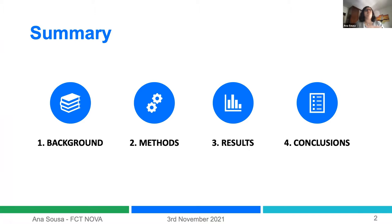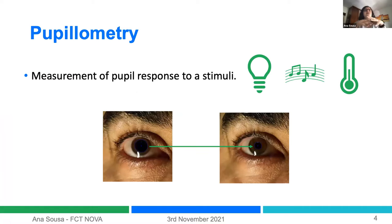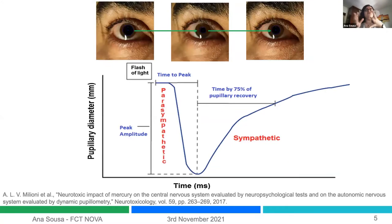First, in the background, we need to know what pupillometry is. Pupillometry is the technique that allows the measurement of pupil response to a stimulus. This stimulus can be light, music, or heat — there are different kinds of stimuli that make our pupil contract and dilate. If we measure it quantitatively, we can build graphics showing the pupil response. For example, after a flashlight, the pupil will start to contract very fast — this is controlled by the parasympathetic autonomic nervous system.